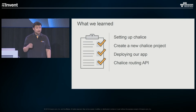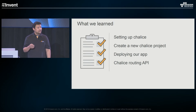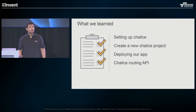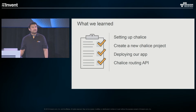To recap what we've looked at so far: we looked at how to set up Chalice, create a new project, deploy it, and saw a quick tour of Chalice routing APIs — handling methods, named captures, and those kinds of things. Now we move to the third part, which I think is the most interesting — real-world use cases showing how Chalice can solve problems you'll encounter as you start writing applications. The first example we're going to look at is a GitHub bot.